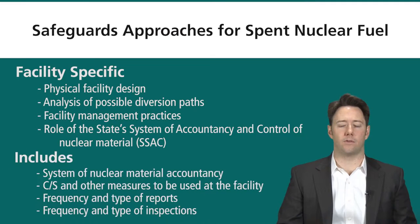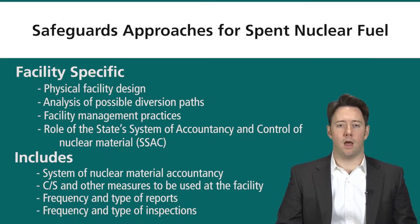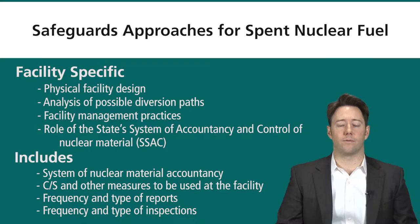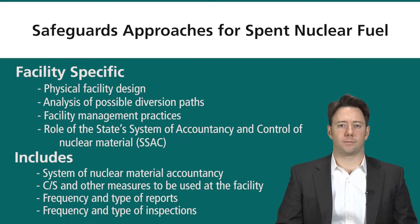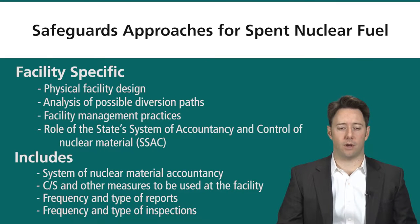The safeguards approach includes the system of nuclear material accountancy, containment and surveillance measures at the specific facility, the frequency and type of reports issued in accountancy reports, and the frequency and type of inspections done at the facility. All these things are facility specific.